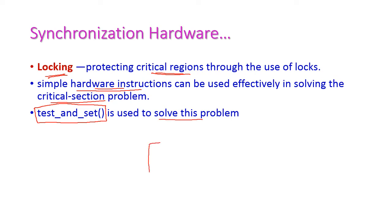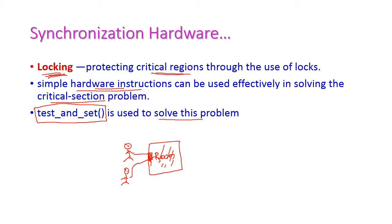Let us understand what locking is. For example, consider a critical section as your room. One person wants to do something alone inside the room, so he opens the door, enters the room, and locks the door. He does all his work inside. After completing, he opens the door and comes out. Then the other person goes inside, locks the room, does all his work, and after completing, opens the door and comes out. Locking is very useful for executing the critical section one by one — all processes execute sequentially.